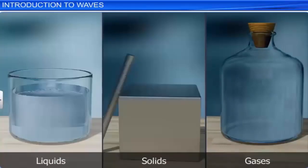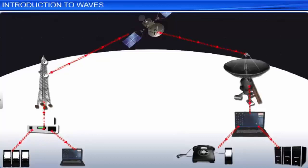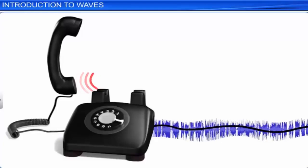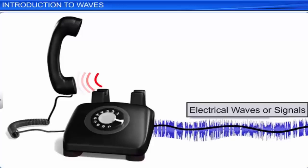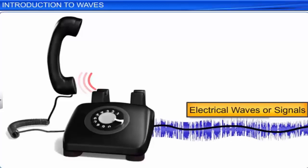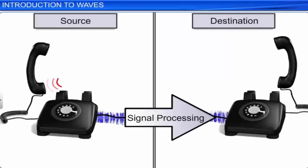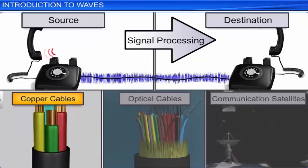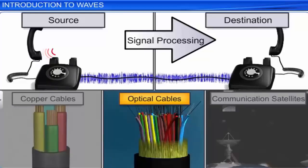In today's world, communication systems play a vital role. These communication systems involve the transmission of waves to send and receive information. For example, while communicating through a telephone, the sound waves produced by the vocal chords are converted into electrical waves or signals at the source. These electrical signals can be processed in different ways to reach the receiving end. They may be transmitted through a copper cable, converted into light signals and transmitted through optical cables, or converted into electromagnetic waves and transmitted through air or communication satellites. The signals received are converted back to sound waves by an instrument at the receiving end.